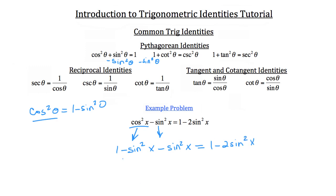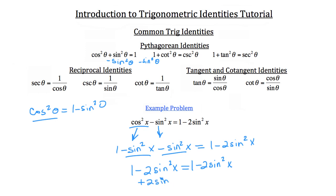We'll combine like terms on the left hand side. I have negative 1 sine squared x and another negative 1 sine squared x, so what I really have is negative 2 sine squared x's. So we have 1 minus 2 times sine squared x on the left hand side, which is equal to 1 minus 2 times sine squared x on the right hand side. Whenever you have something on the left equal to itself on the right, you've proven your identity. To make it easier to see, I'll add 2 sine squared x to both sides — the negative 2 sine squared x cancels on both sides, and what we have is 1 is equal to 1.